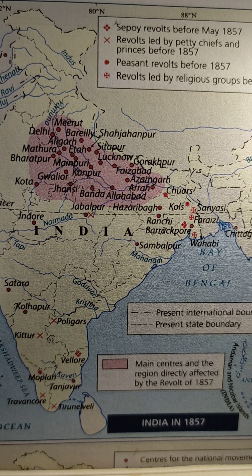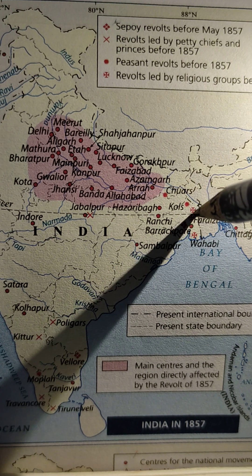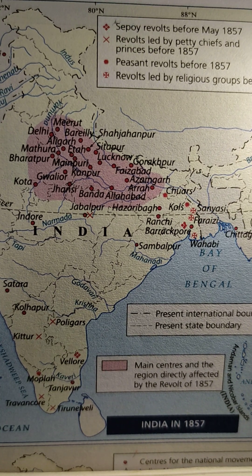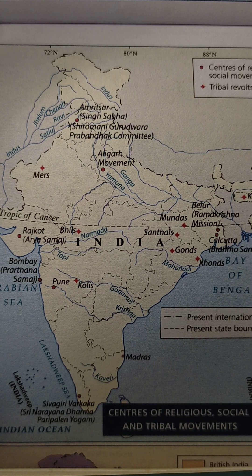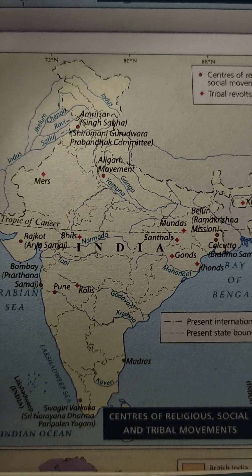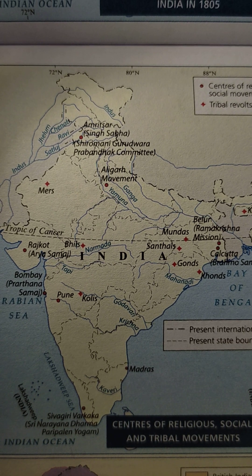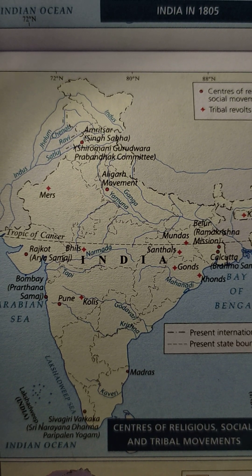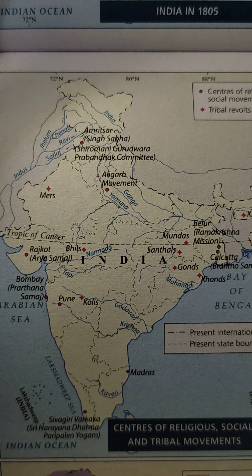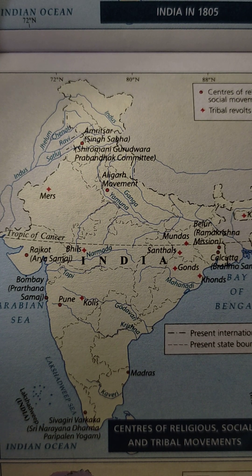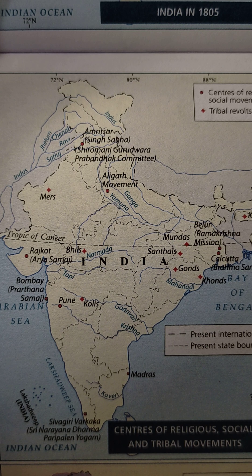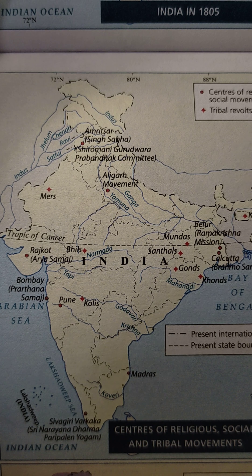This is the area here. After the centres of religion, social and tribal movements — this red circle dot area is the centre of the religious and social movement. First is the Amritsar Singh Sabha — this is the area of the centre of the religious and social movement.